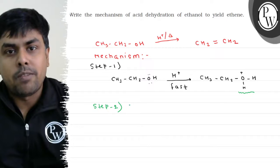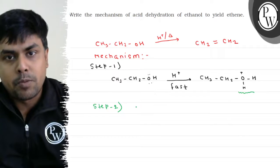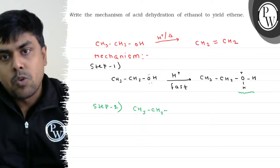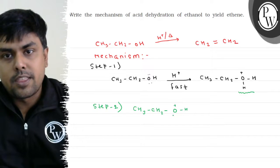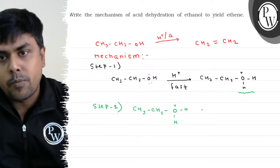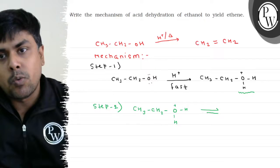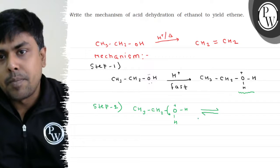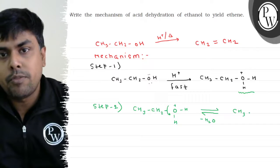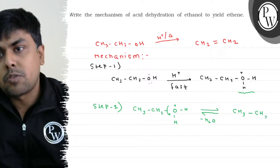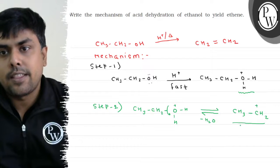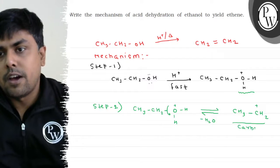So, step 2 involves the departure of leaving group. First, let's write CH3, CH2, O positive H, H. This step will be relatively slow by formation of carbocation minus H2O. So, what I will have? I will have the formation of CH3, CH2 positive, right? Carbocation.